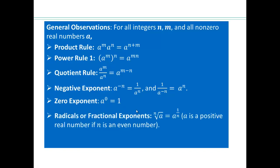Fractional exponents are radicals. For example, a to the power 1 over n means the nth root of a. The a sitting inside the radical sign is called the radicand, and n is called the index.